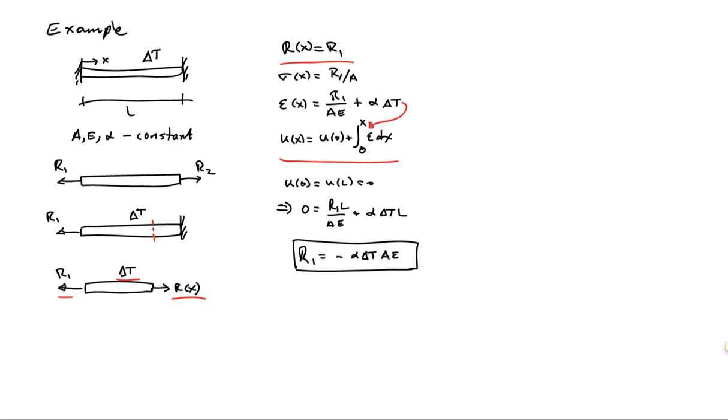So we can now go back and evaluate all our expressions for our internal fields. We find that we have this compressive internal force field everywhere. The stresses will be compressive. They're minus alpha delta T E. But the strains are zero, and the displacements of every material point are zero.